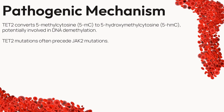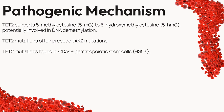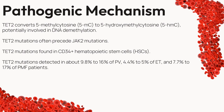TET2's influence extends beyond its direct effects — it often precedes JAK2 mutations and is found in CD34+ hematopoietic stem cells, a combination that might create a predisposition for JAK2 mutations. The frequency of TET2 mutations varies across MPNs: approximately 9.8% to 16% in PV, 4.4% to 5% in ET, and 7.7% to 17% in PMF patients, underscoring its relevance in disease progression.